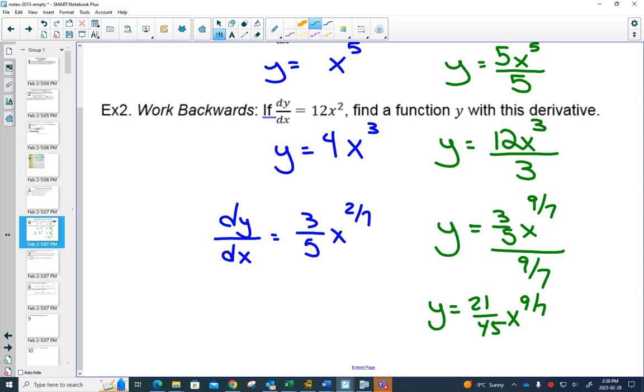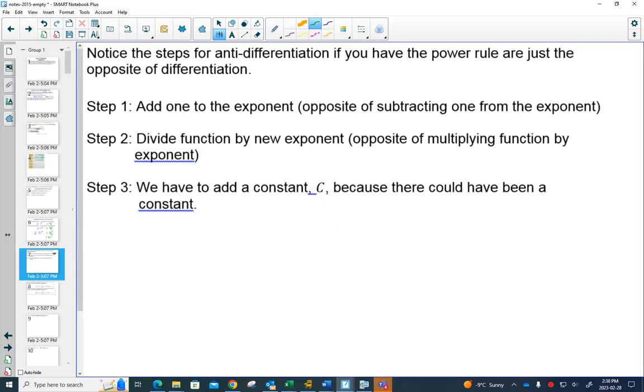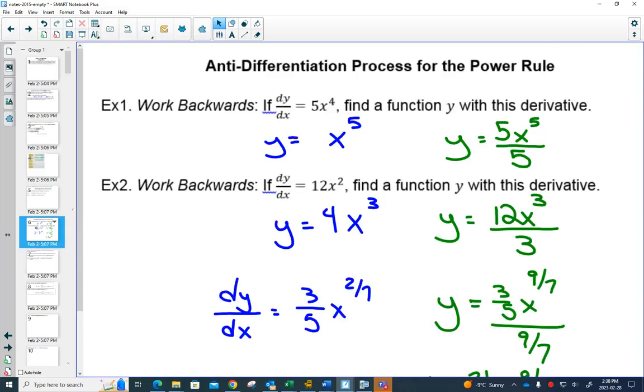So all we're doing is undoing what we did before. Undoing the subtract 1 from the exponent would be add 1 to the exponent. And undoing the multiplying the front by the 5 would be dividing by 5. So we can do that all the way through. And now we have a technique for getting our power rule backwards. Add 1 to the exponent, that's the opposite of subtracting. Then divide by that new exponent, which is the opposite of multiplying. When we do the anti-derivative, we're going to add plus C to each of these to show that there could have been a constant at the end.